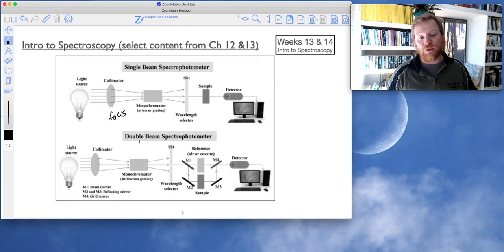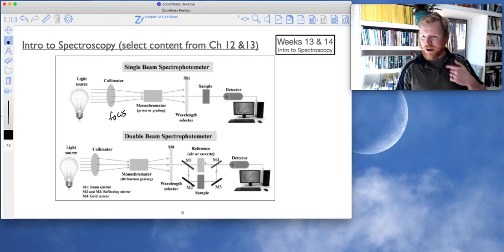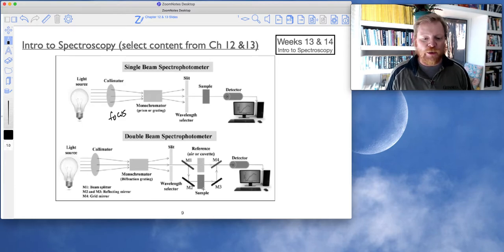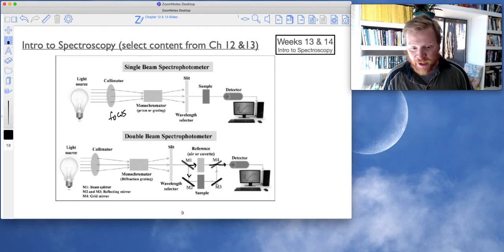So the really fancy spectrometers are double beam instruments where you will load in your reference, and this says air or cuvette, cuvette containing the solvent is what I recommend, and then your sample. And again, we hope that this reference or this background is as identical as possible to the sample. And so now this is pretty cool. So the setup is almost identical to the single beam, except for now we have here, you can see M1 is a beam splitter. So half the light will go down this way, and half will go down this way. So the half that goes through the reference will just pass right through what's called this grid mirror, and this grid mirror allows light to pass through from one side, so it's transparent on one side, and it's opaque on the other side.